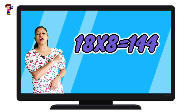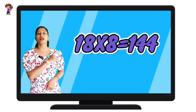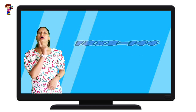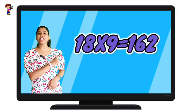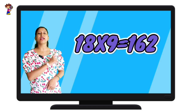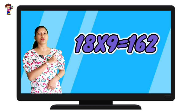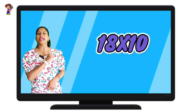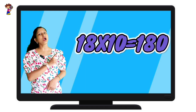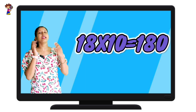18 eights are 144. 18 nines are 162. 18 tens are 180.